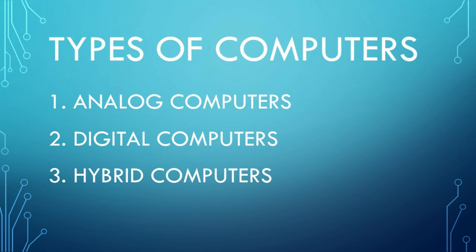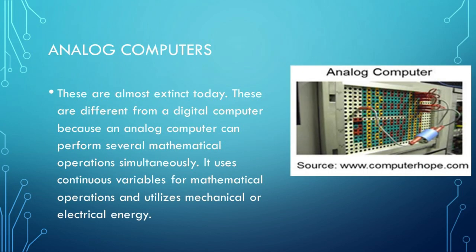Analog Computers are almost extinct today. They are different from digital computers because an analog computer can perform several mathematical operations simultaneously. It uses continuous variables for mathematical operations and utilizes mechanical or electrical energy.